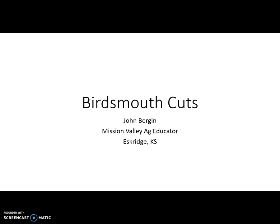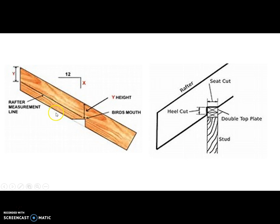Students calculate the rafter cuts, including where to cut the heel and where to cut the top of the rafter. There's a lot of math involved, and a little bit of error can create a lot of problems. I teach students the math behind this and how to use a rafter square, but sometimes it's also important to apply a quick method like they do in industry — using a rafter calculator, which is readily available on the internet.